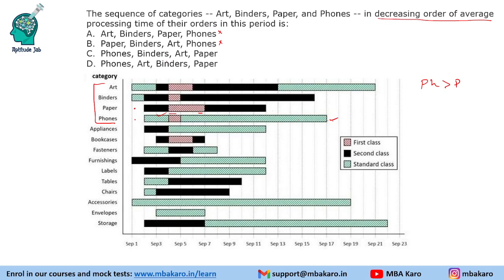We are left to compare binders and arts. For arts, the orders span from September 1 to September 21 — that is 20 total days across 5 bookings, giving an average of 4 days. For binders, the total span is 15 days across 4 bookings, giving an average of 3.75 days. Since 4 is greater than 3.75, art comes before binders. The final answer in decreasing order is: phones, arts, binders, paper.